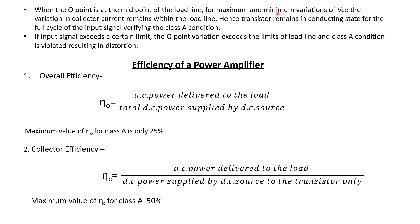If the input signal exceeds a certain limit, the Q point variation exceeds the limits of the load line and the Class A condition is violated. We must keep the input signal within a size such that the Q point does not go beyond the saturation point and the cutoff point.